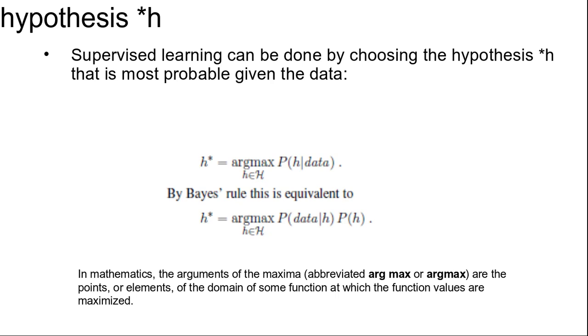In some cases, an analyst looking at a problem is willing to make more fine-grained distinctions about the hypothesis space—not just that a hypothesis is possible or impossible, but rather how probable it is. Supervised learning can be done by choosing the hypothesis h* that is most probable given the data: h* = argmax P(h | data), where h belongs to H.